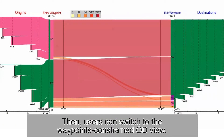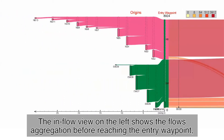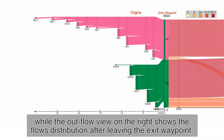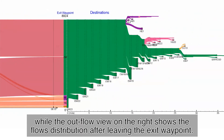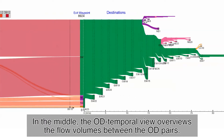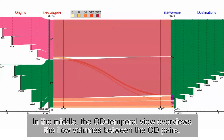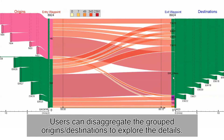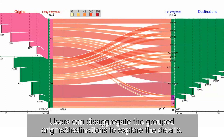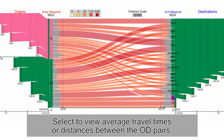Then users can switch to the waypoints-constrained OD view. The inflow view on the left shows the flows aggregation before reaching the entry waypoint. In the middle, the OD temporal view overviews the flow volumes between the OD pairs. Users can disaggregate the grouped origins or destinations to explore the details, and select to view average travel times or distances between the OD pairs.